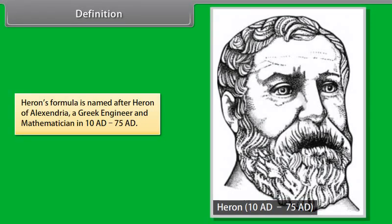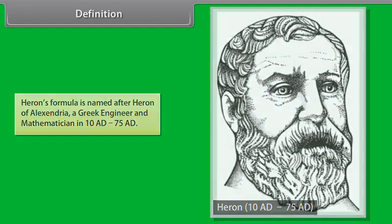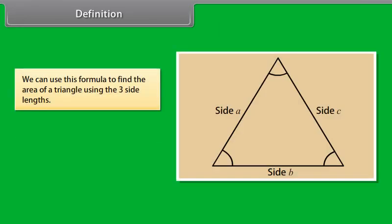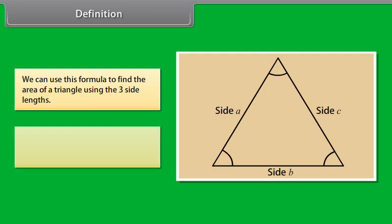Definition. Heron's formula is named after Heron of Alexandria, a Greek engineer and mathematician. We can use this formula to find the area of a triangle using the three side lengths. The formula given by Heron about the area of a triangle is also known as Heron's formula.